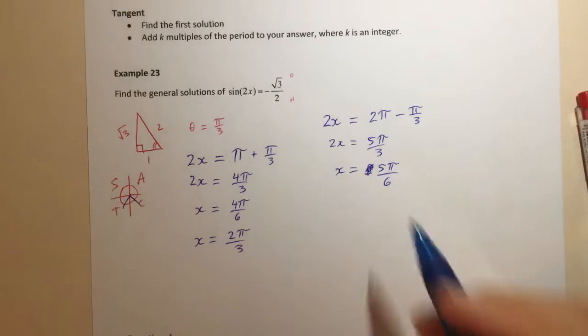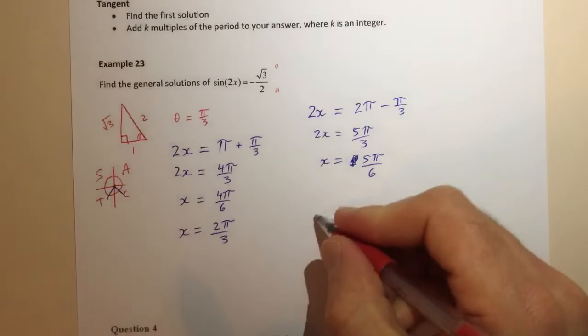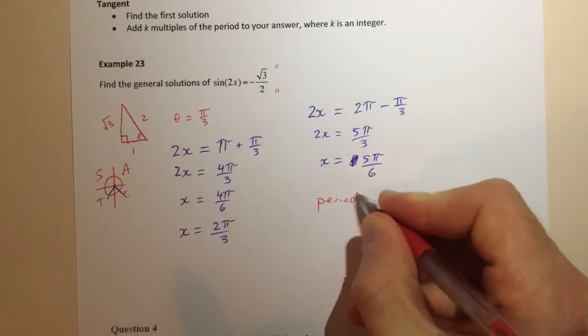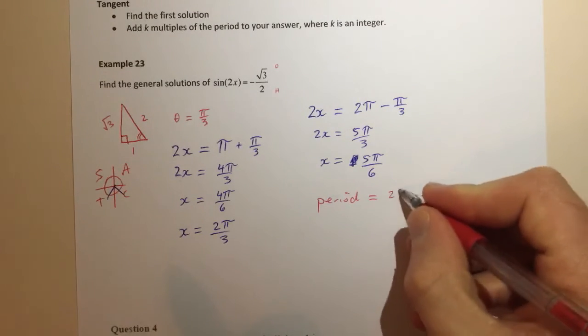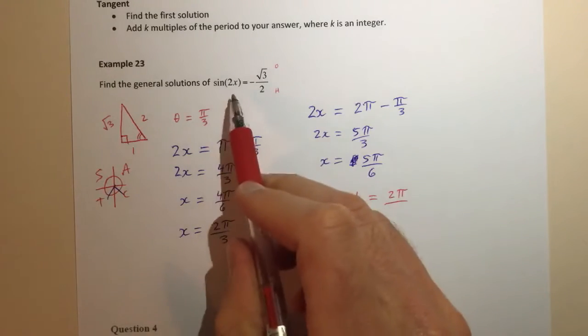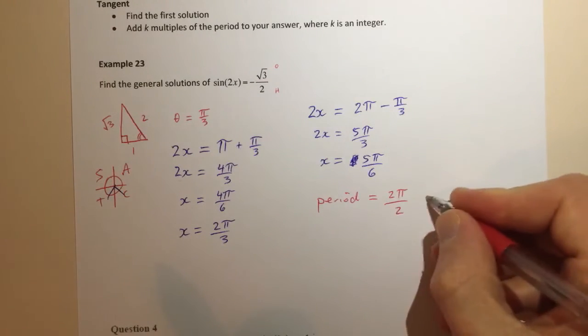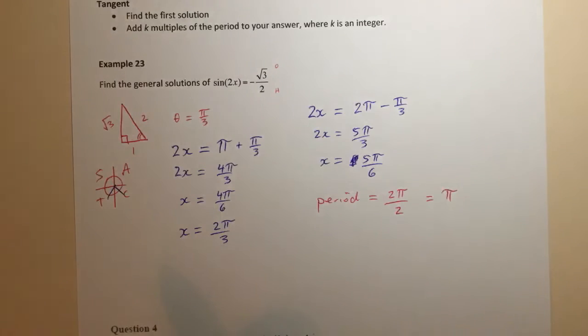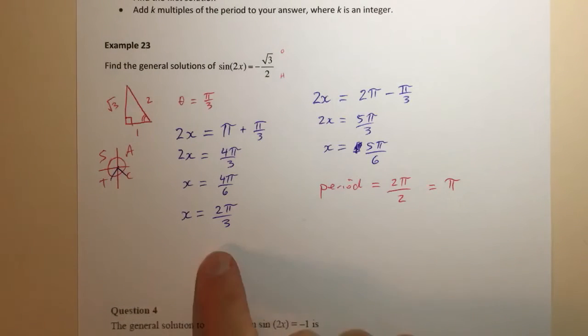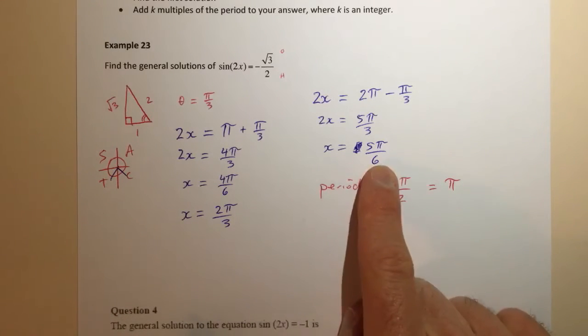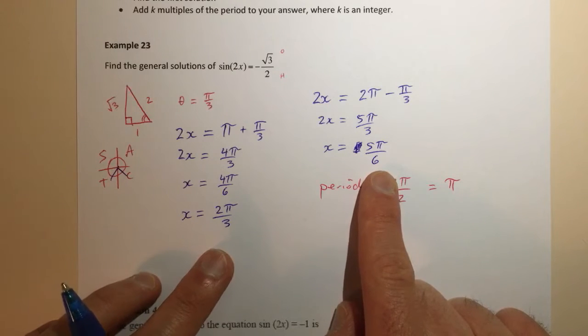What we do is we say okay well like always what is the period of the function, and for this question it's a sine function and so it's 2π over n and n is 2 in this question so the period is π. And what we're going to do is we're going to add π or whole number multiples of π to both of these solutions, and try to write it in a way that kind of just makes that happen over and over and over again.